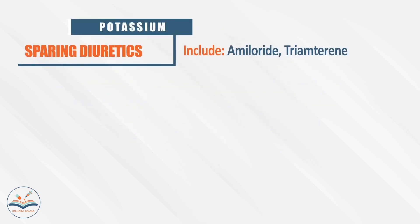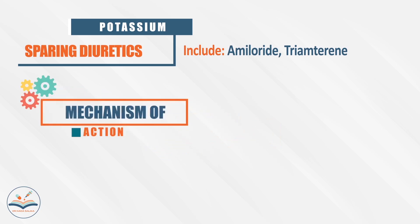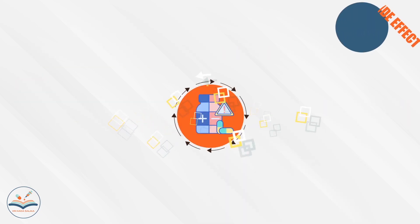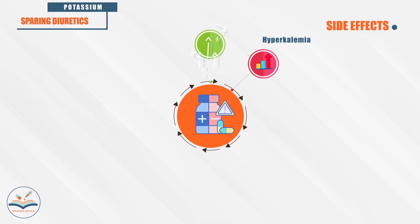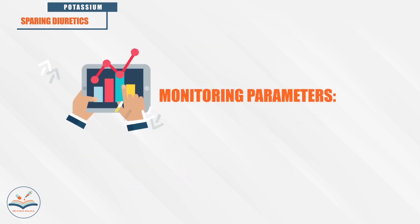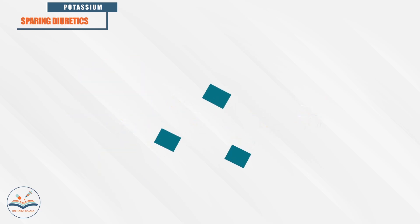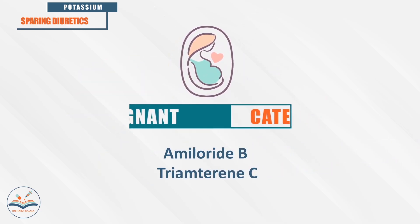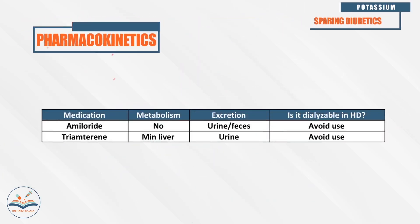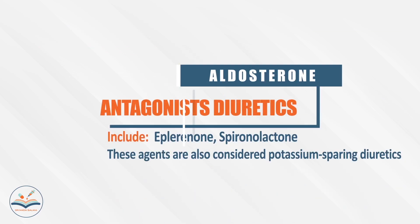Potassium-sparing diuretics, like amiloride, inhibit sodium reabsorption, reducing excretion of potassium, calcium, magnesium, and hydrogen, and increasing excretion of sodium and water. Side effects include hyperkalemia, anorexia, diarrhea, headache, nausea, and vomiting. We have to monitor electrolytes. Amiloride is category B and triamterene is category C. They should be avoided in hemodialysis patients.